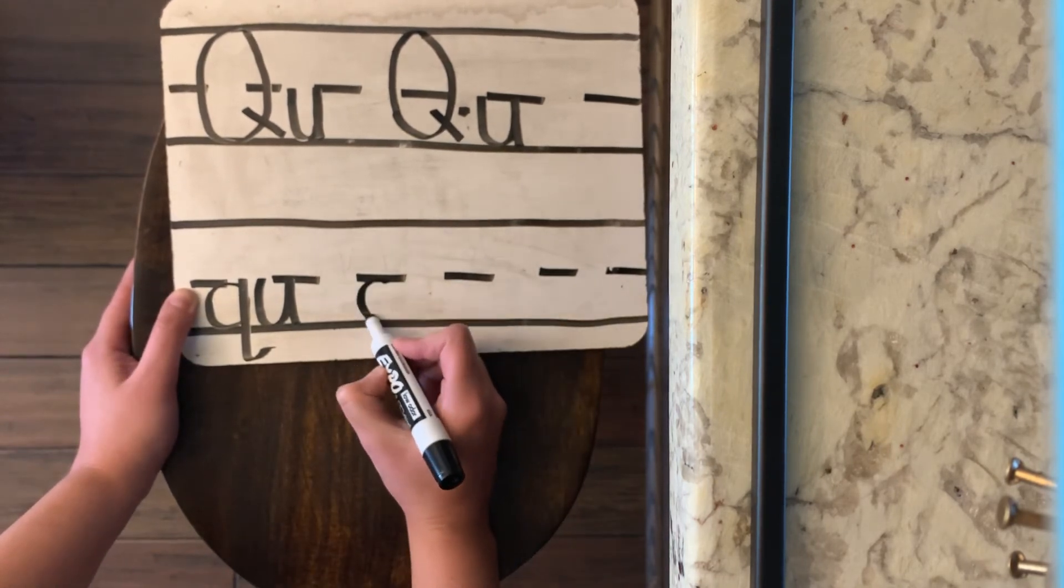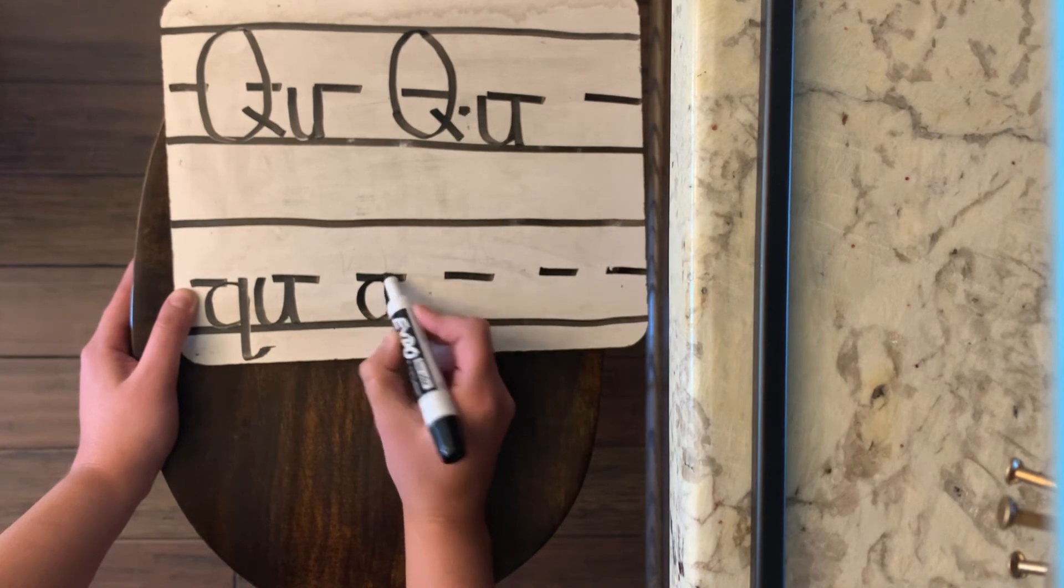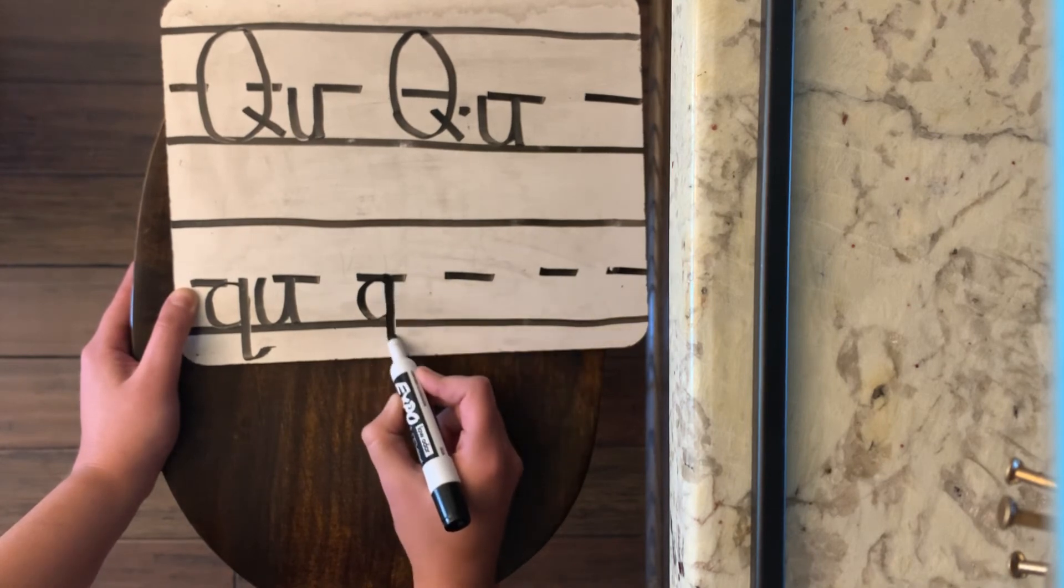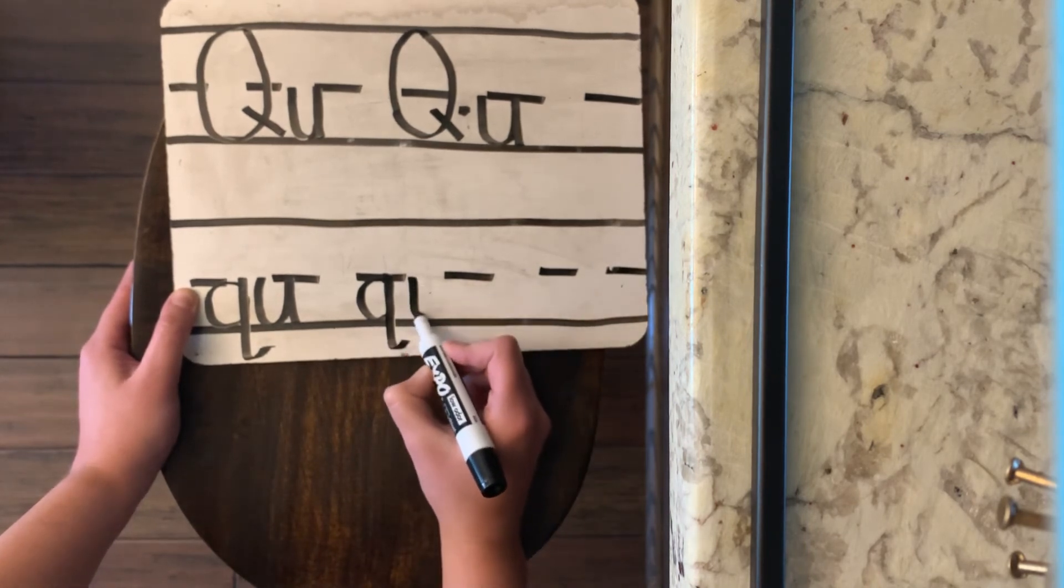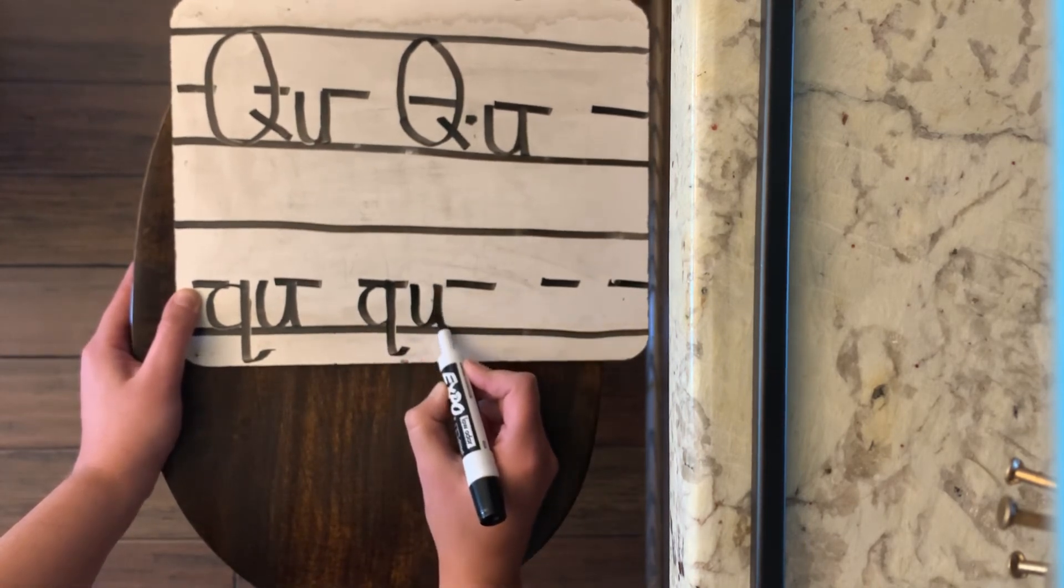Let's try that again. Magic C, up like a helicopter, down, and backwards. And then our U. Okay?